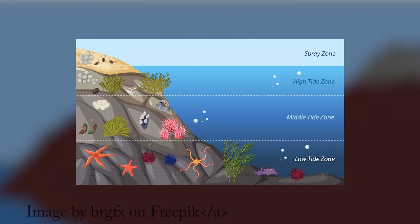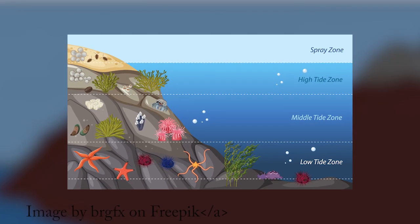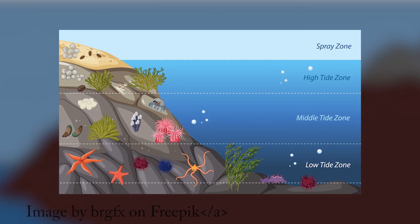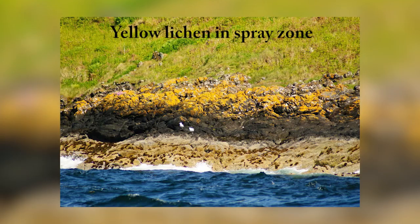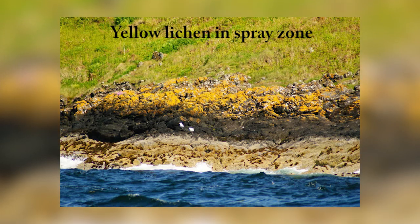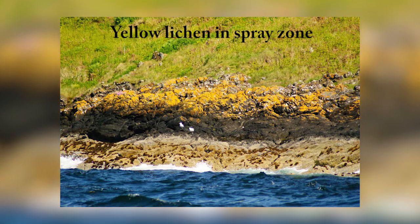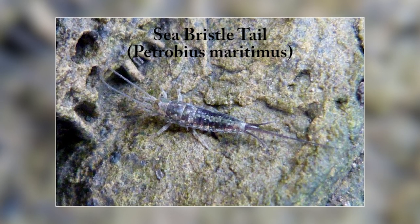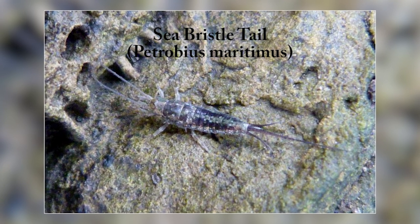At the top is the spray zone. It is submerged only during very high tides or severe storms, but is dampened by ocean spray and high waves. It is inhabited by life which is adapted to live on land but has a high tolerance to salt, such as lichens, the sea bristletail, and algae such as the yellow-brown channeled wrack.